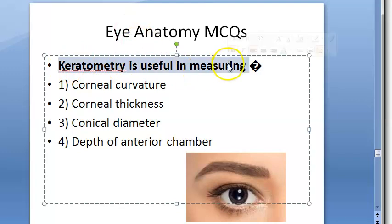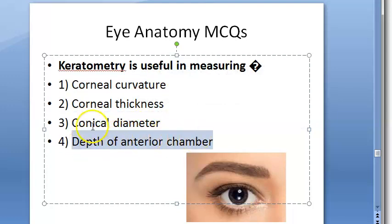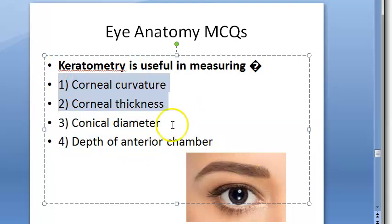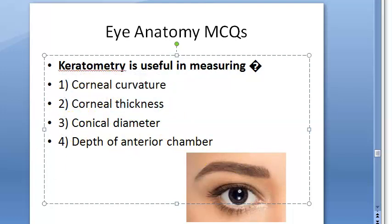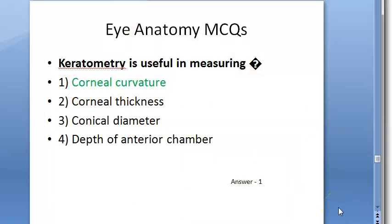Keratometry is useful in measuring — what will you measure? Corneal curvature, corneal thickness, corneal diameter, or depth of anterior chamber? There is another term, pachymetry, which measures thickness. So the answer here should be corneal curvature. Yes, corneal curvature.